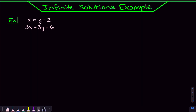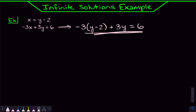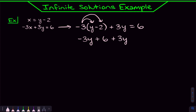Now we'll do an example with infinite solutions. I can already see that X is by itself on the left-hand side, so I'll use substitution method. X is the same thing as Y minus 2. In the bottom equation, instead of writing negative 3X, I'll substitute in Y minus 2, then plus 3Y equals 6. Distributing negative 3 to Y gives negative 3Y; distributing to negative 2 gives positive 6. Then we have plus 3Y equals 6.